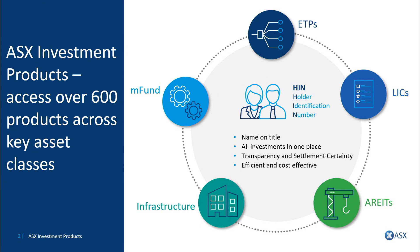Importantly, all of these investment products can be held on an investor's holder identification number or the broker-sponsored HIN. This gives investors name on title and allows them to hold all of these products, including their Australian shares, all in one place. This gives investors transparency and settlement certainty, making the buying and selling of investment products more efficient and cost effective.